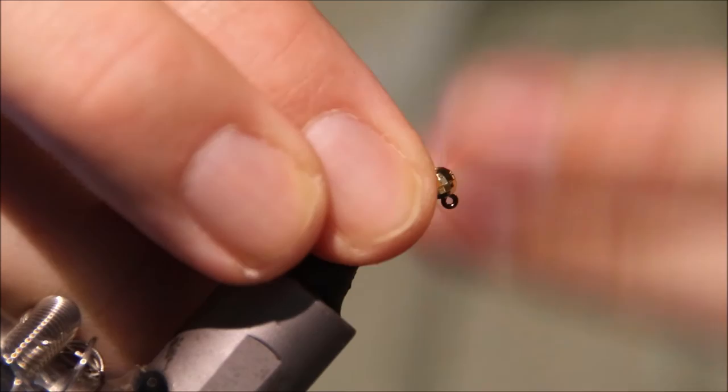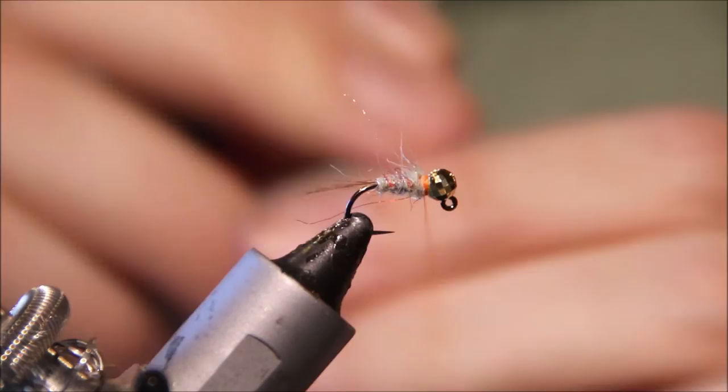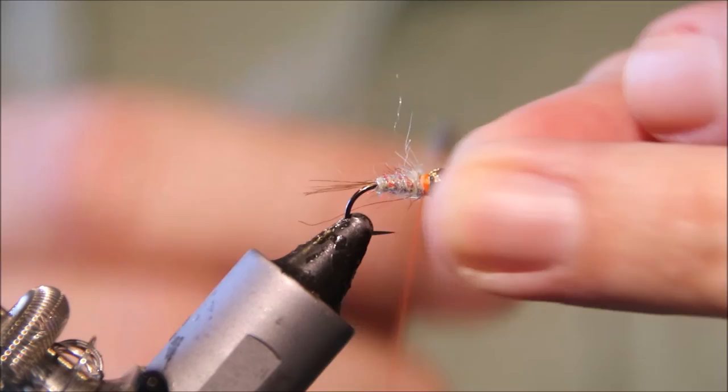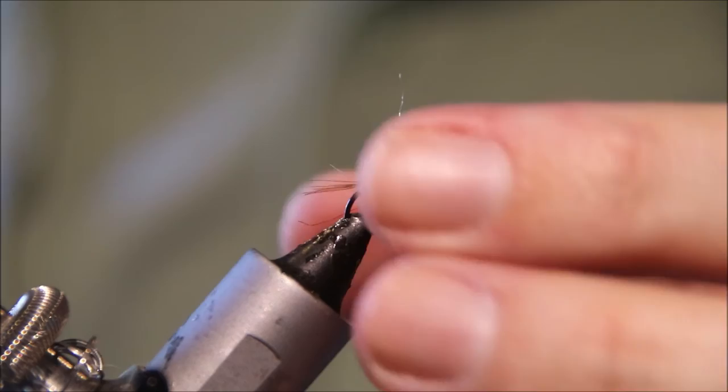I'll come in, four or five turn whip finish, and another. That helps to build up a nice wee hot spot collar with the fluorescent orange thread.